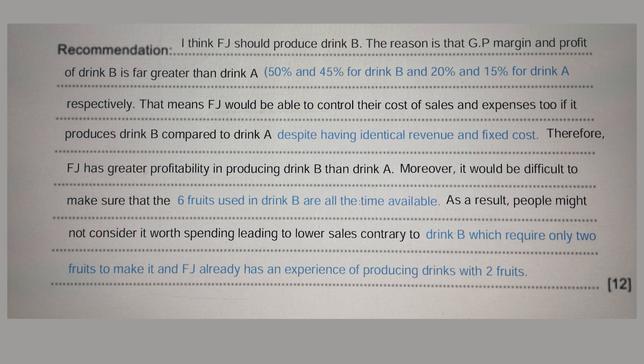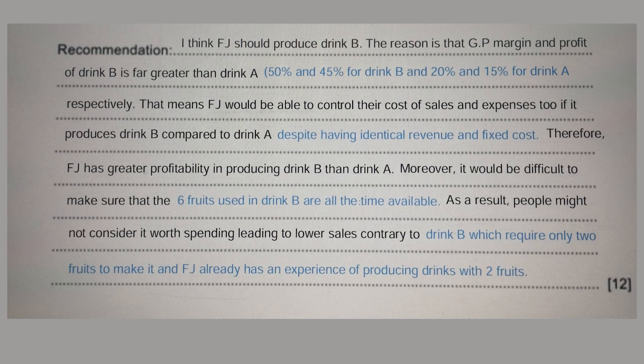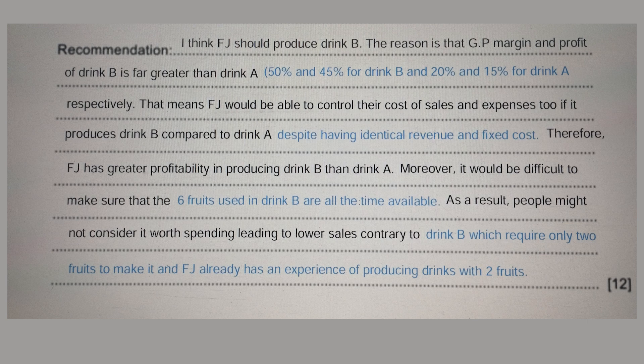Moreover, it would be difficult to ensure that all six fruits used in Drink A are available at all times. As a result, people might not consider it worth spending the higher price — leading to lower sales. There is no point paying a high price if the taste has been compromised, particularly for high-income consumers. In contrast, Drink B requires only two fruits, which are much easier to arrange compared to six fruits required for Drink A.